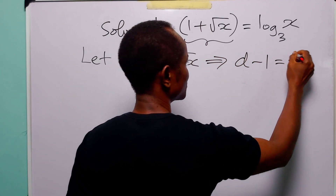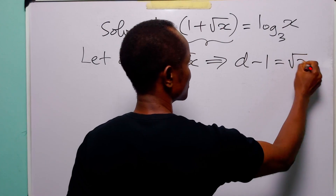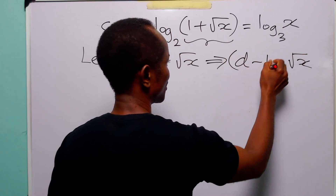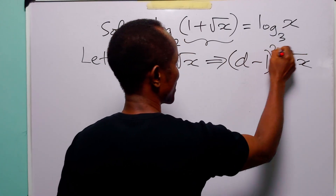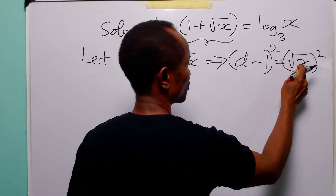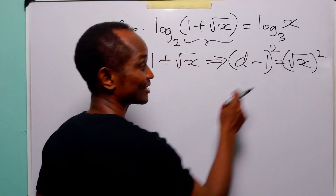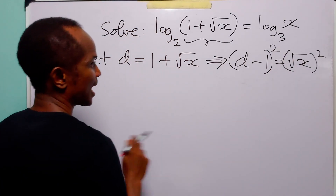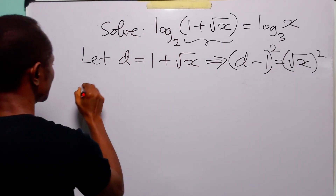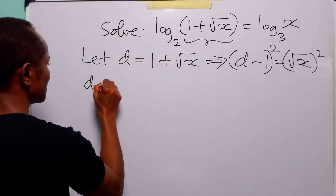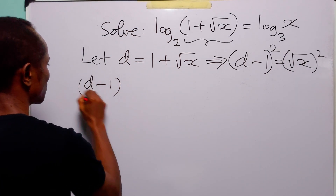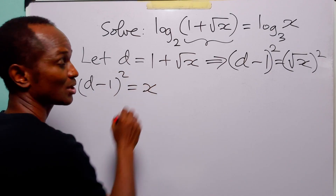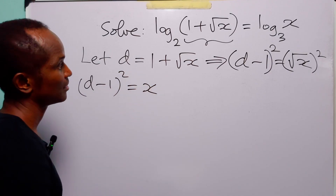When we square both sides of this equation, we are going to get rid of the square root sign, and we will have that (d minus one) squared is equal to x.